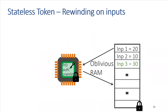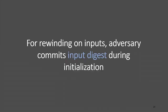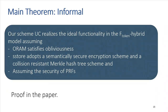A similar situation arises if the adversary tries to rewind while providing inputs — giving one input, rewinding, and then providing a partial or different input. To handle this, we require the adversary to commit to an input digest ahead of time. These are the high-level ideas we employ in designing our obfuscation scheme using stateless tokens; the full scheme and proof appear in the paper.